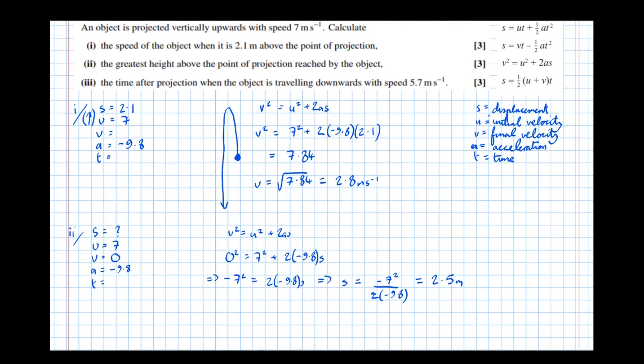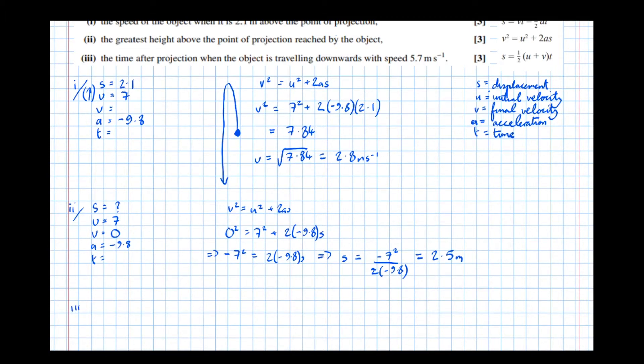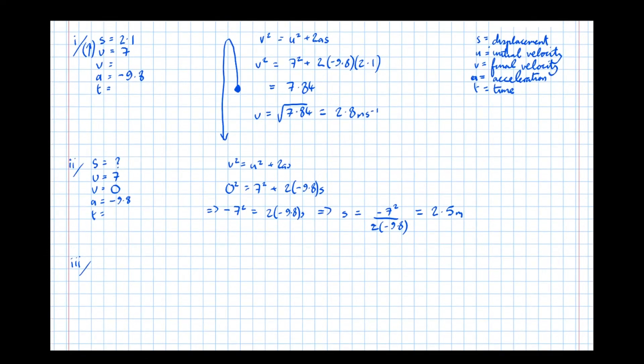Finally, part three. The time after projection when the object is traveling downwards with speed 5.7 meters per second. So again, s, u, v, a, t.